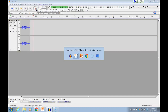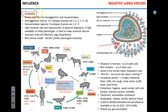Let's talk about the influenza virus. It's enveloped — you can see the envelope right here — and it has a negative single-stranded RNA, shown on this image, which is segmented. We'll talk about the importance of segmentation of viral RNA in a little bit.